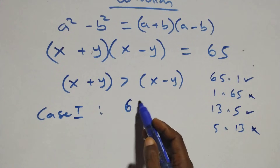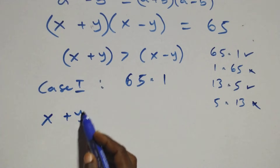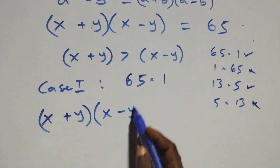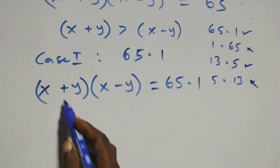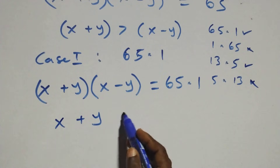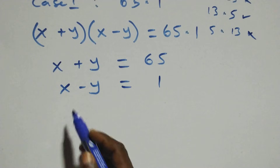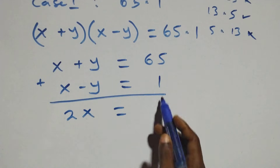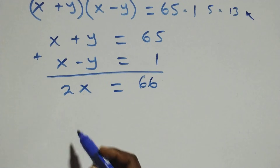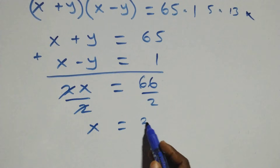Case 1 is 65×1, so we rewrite the equation as (x+y)(x−y) = 65×1. The first bracket gives x+y = 65, and the second bracket gives x−y = 1. Solving simultaneously by adding: 2x = 65+1 = 66, and dividing both sides by 2 gives x = 33.